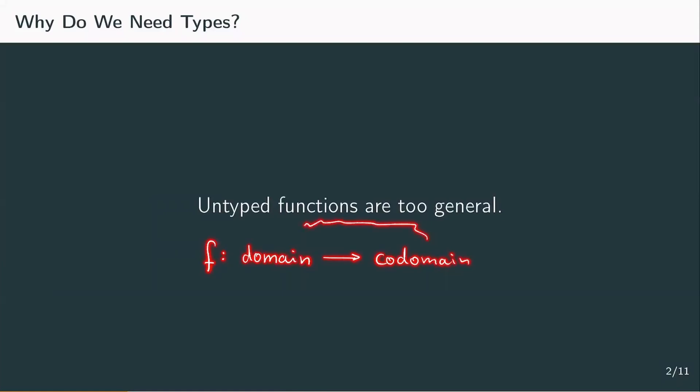Even more so if we talk about programming, where it's important that we get an element with specific properties as an input. So we want to be able to restrict the input of a function and also be able to specify what kind of objects the function is going to return. In order to do so, we introduce simple types. Each term of the lambda calculus will get a type which contains the information on its required input type and what type the output will have.